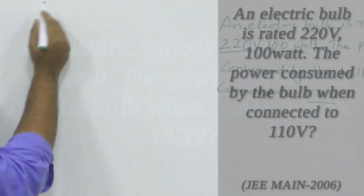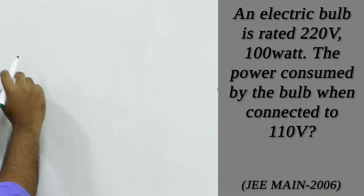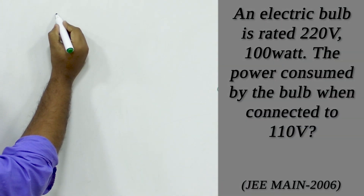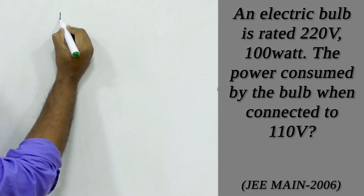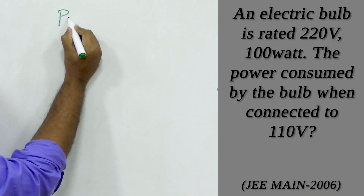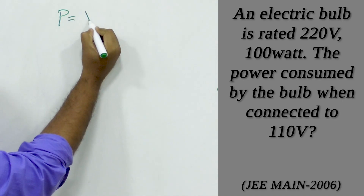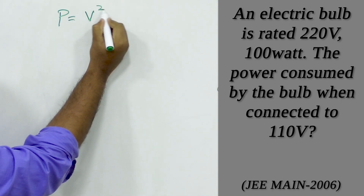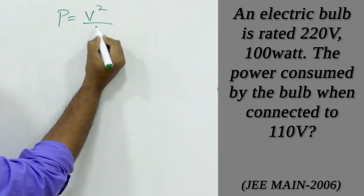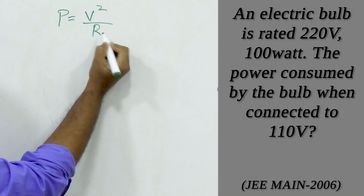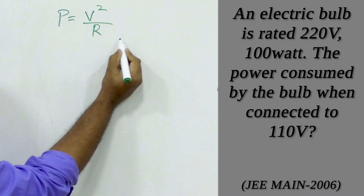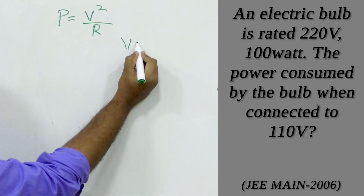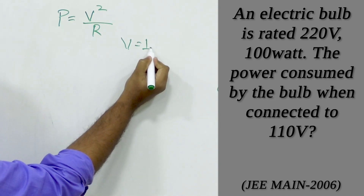To solve this question we must know the basic relation that power P is equal to V squared by R, and the basic Ohm's law V is equal to IR.